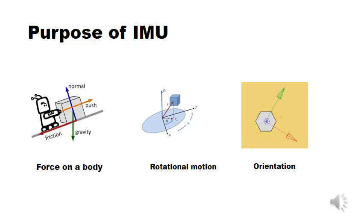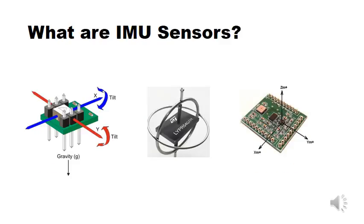Purpose of IMU is to measure a specific force on a body or its rotational motion or sometimes its orientation. It is the main component of inertial navigation system used in aircrafts, drones and in many.